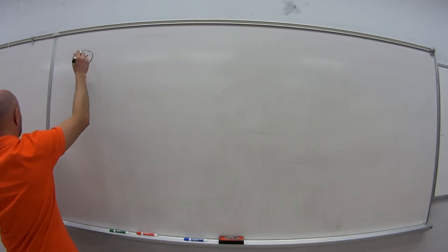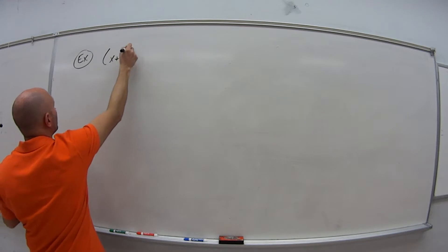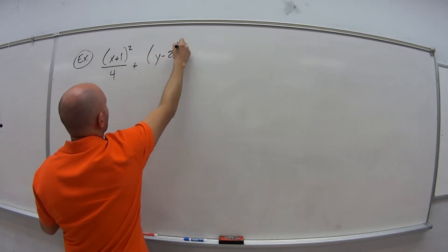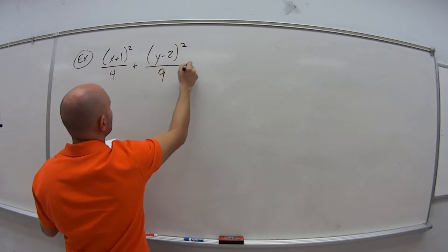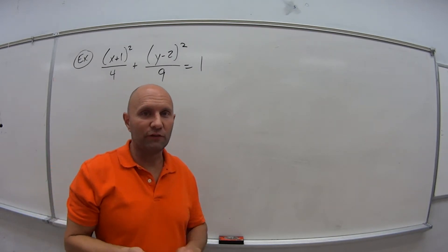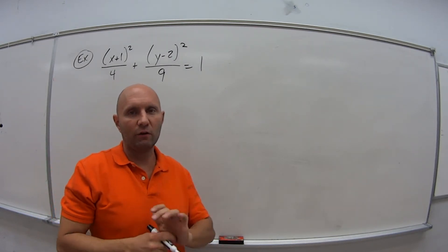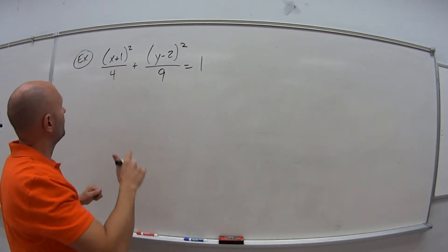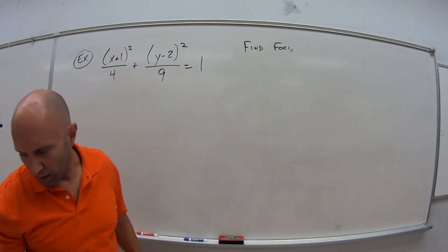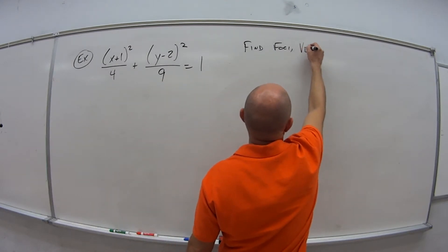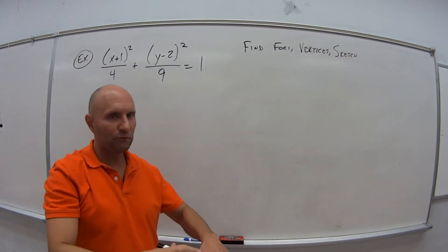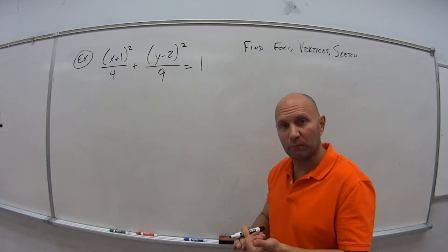The first example we're going to look at is: x plus 1 squared over 4 plus y minus 2 squared over 9 is equal to 1. I didn't tell you whether this is an ellipse or a hyperbola, whether it's horizontal or vertical. With this problem, we want to find the foci, find the vertices, and sketch it. This is absolutely typical of the kind of problem you'll see on exam 3 or the final exam.